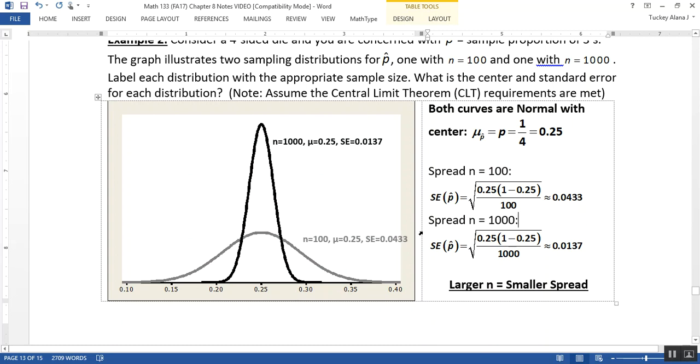And the gray one is the one that has the larger spread, so it has a smaller sample size. The larger your sample size, the smaller your spread. The smaller your sample size, the larger your spread.